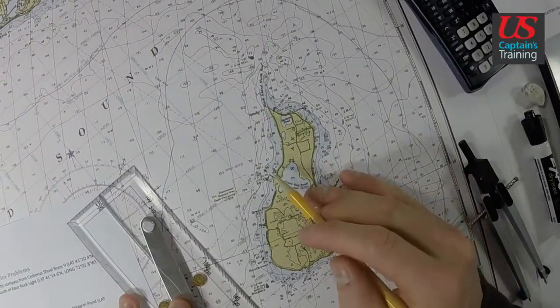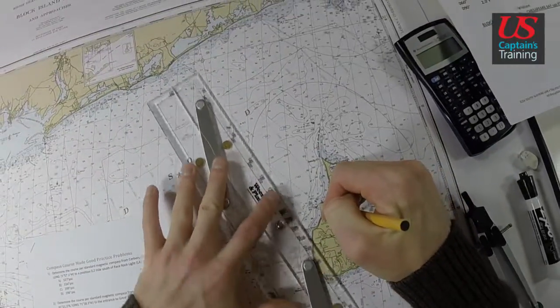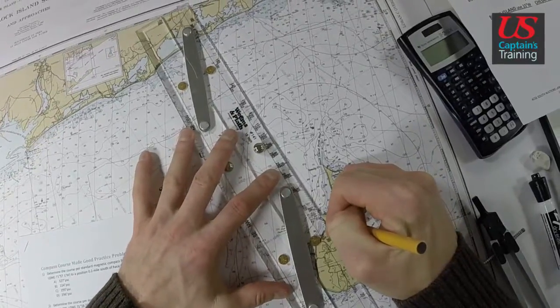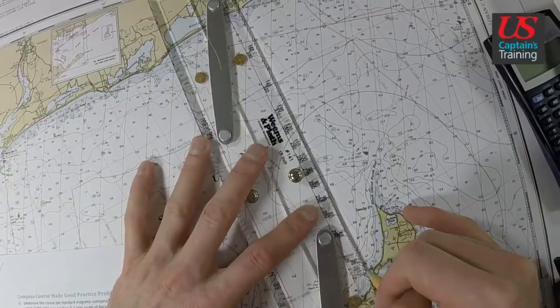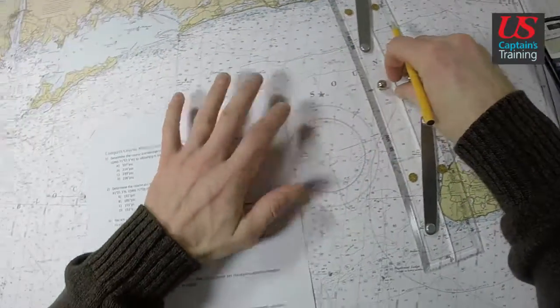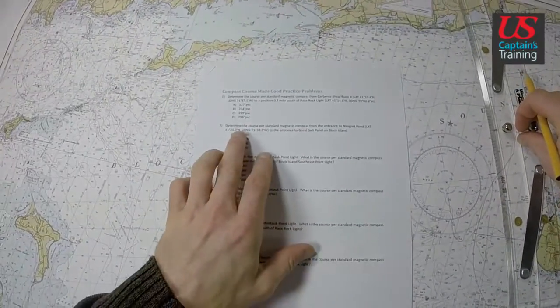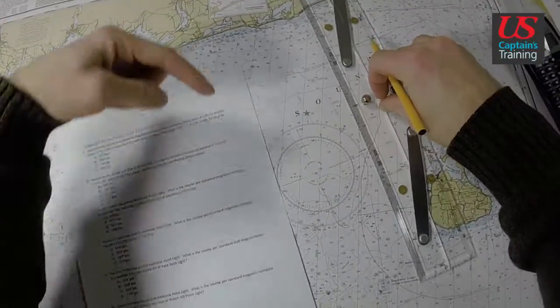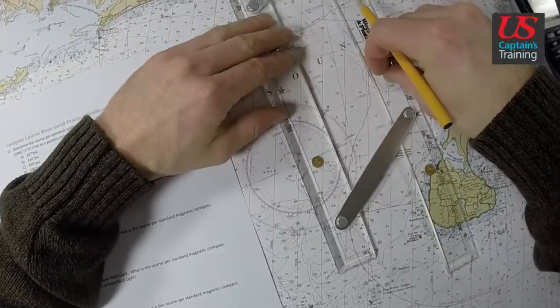I'm going to use this light right here. I'm going to put my pencil lead here, bump my parallel rules to it, go to the entrance to Ninigret. I need to know where I'm starting and where I'm going, so I'm starting at Ninigret, going to Great Salt this way, so I'm reading this side of the compass. Walk these over.